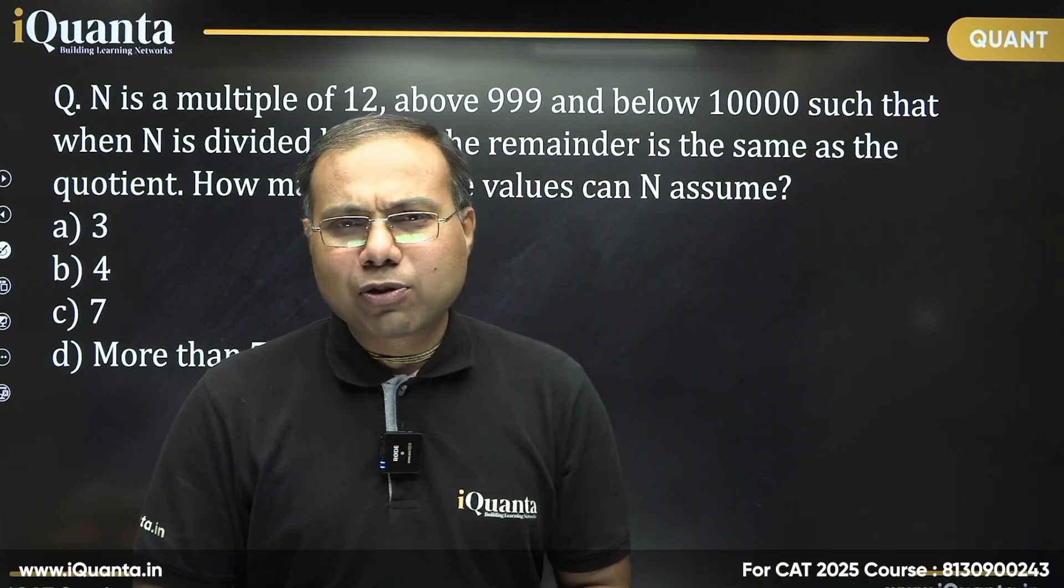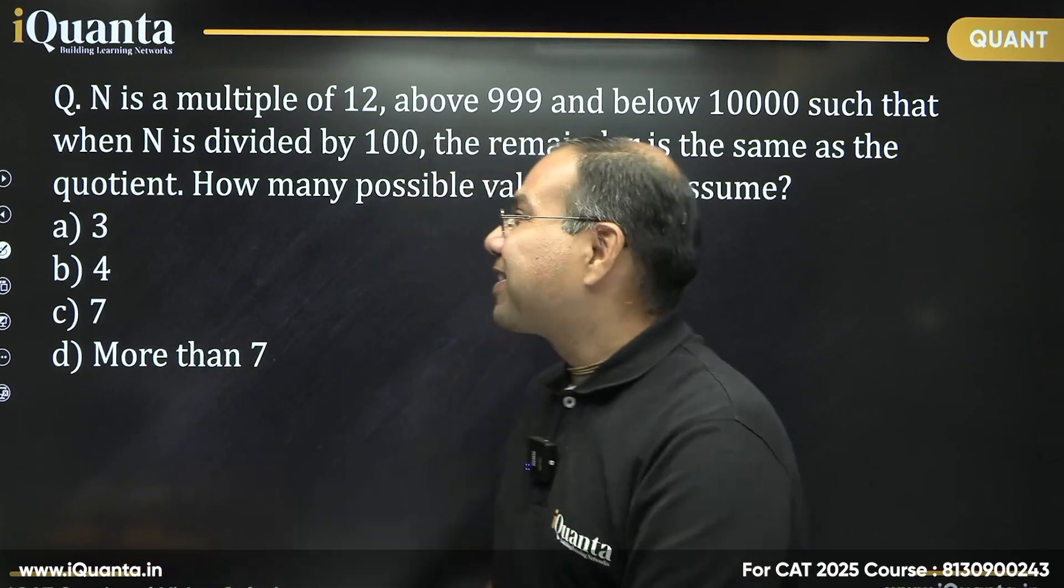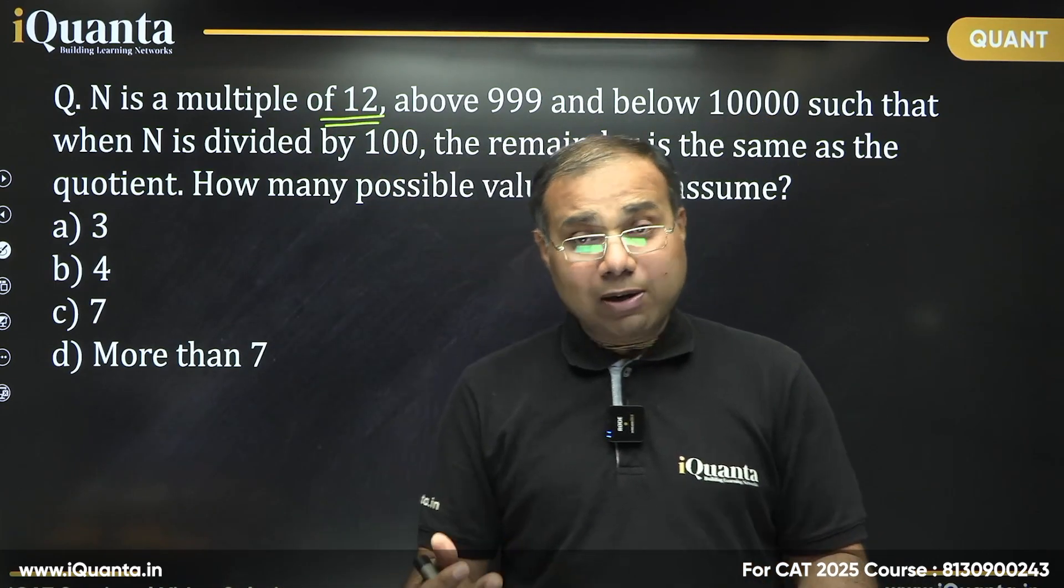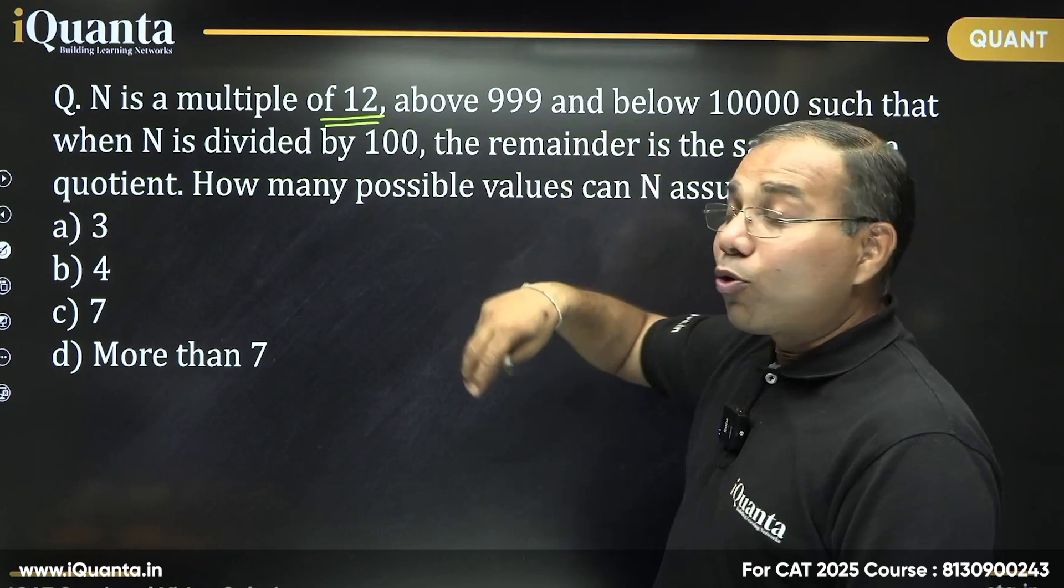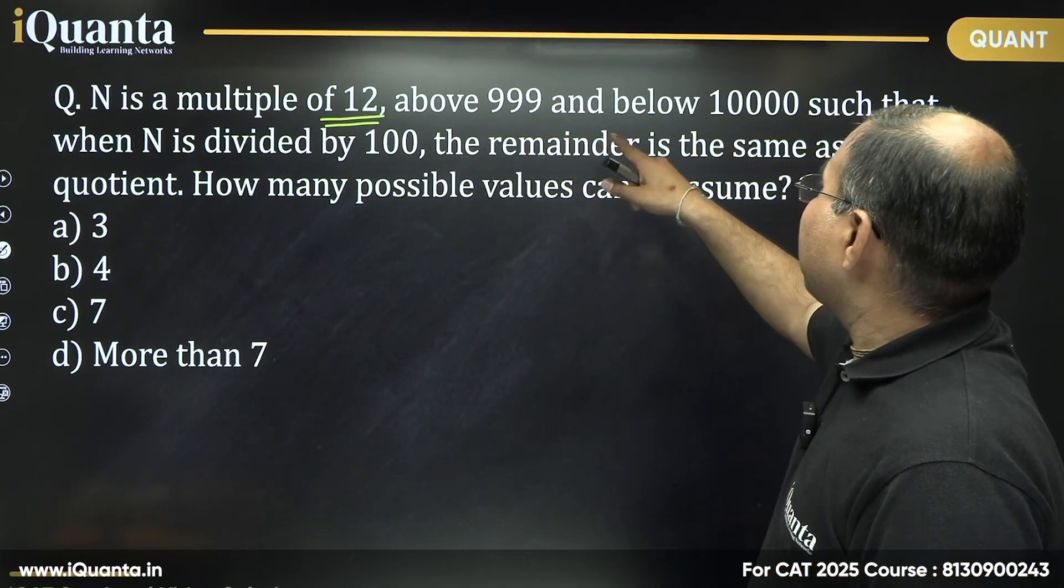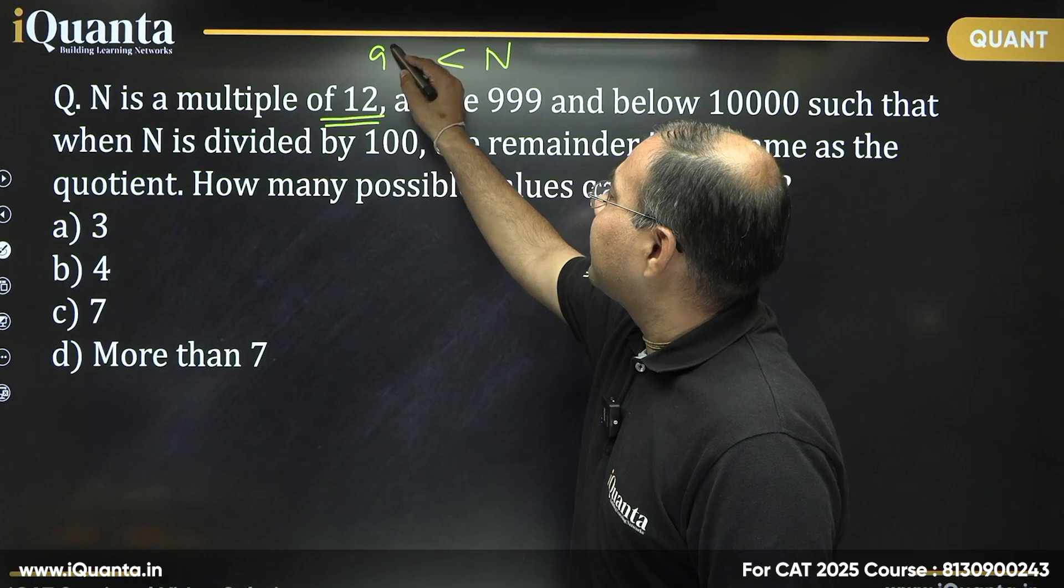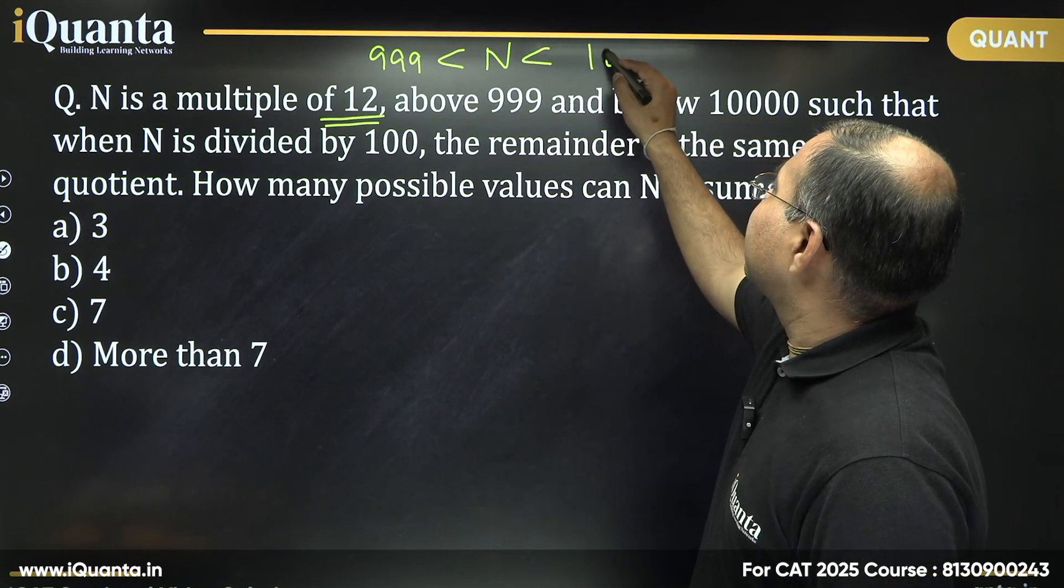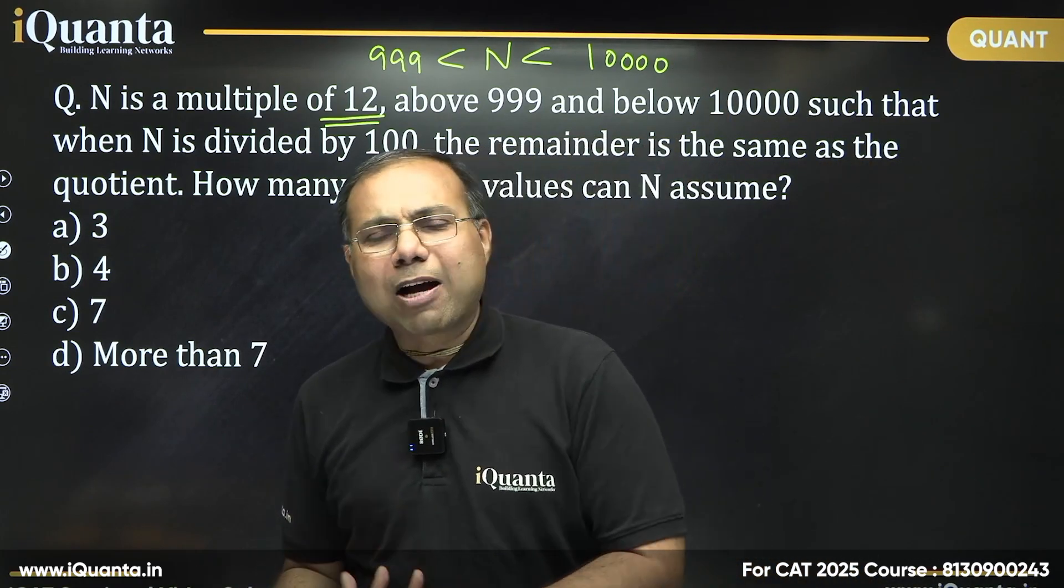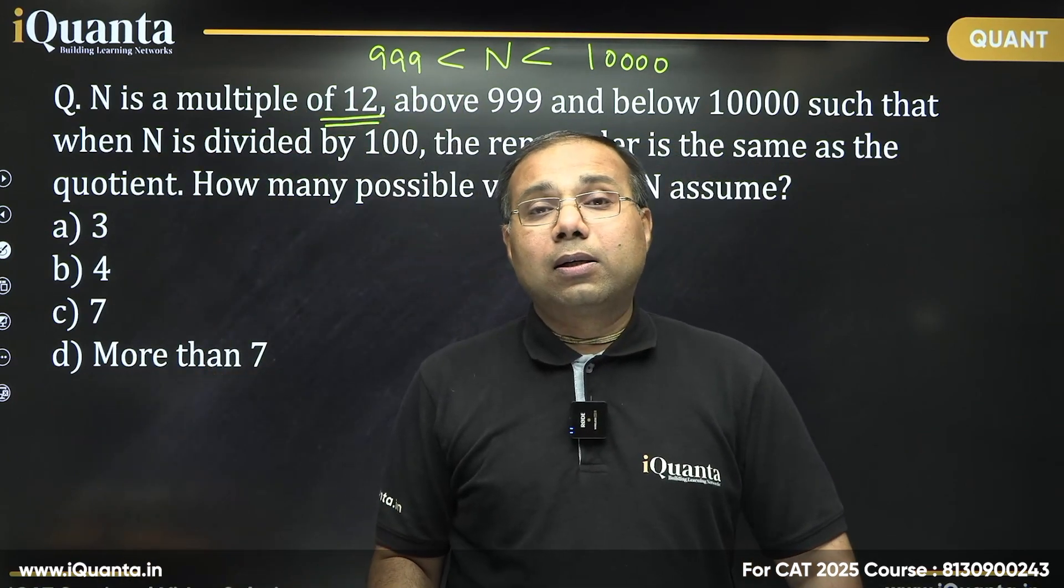Okay, I hope all of you have solved this question. Let us see now. It says N is a multiple of 12. We are talking of a certain number which is a multiple of 12. Now, above 999, so it is more than 999, that means minimum it should be 1000 or more than that. And below 10,000, that is the range of this number. So N is greater than 999 and less than 10,000. Basically it is a four digit number, starting from 1000 up to 9999 maximum, and it must be a multiple of 12 as well.